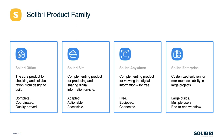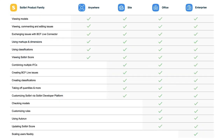This is our product family. Solibri Anywhere is free — it's our model viewing tool. Solibri Site is there for design managers, anybody looking to take information out of the models themselves. But arguably, what's the point in doing that if that information hasn't been validated and isn't fit for purpose? That's what Solibri Office is all about: our model checking, data validating, quality assuring version of our software.